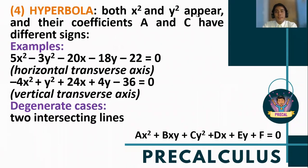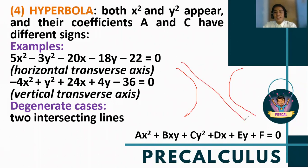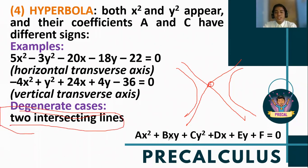For the equation of the hyperbola, both x squared and y squared appear, but notice that their coefficients have different signs. For example, 5x squared minus 3y squared — there is a difference in sign, so you can easily identify the equation of a hyperbola. Similarly, a negative leading term with positive y squared also forms a hyperbola. Both are examples of horizontal and vertical hyperbolas respectively. The degenerate case of a hyperbola — if the hyperbola does not exist — would be two intersecting lines, since the asymptotes of a hyperbola intersect.